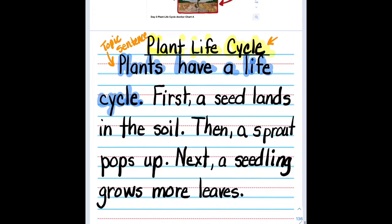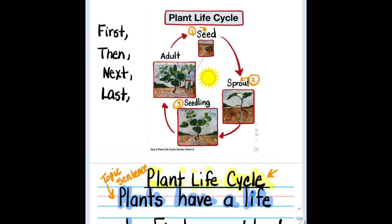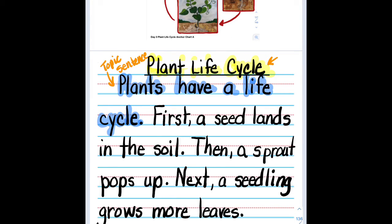And then we have the last part, the adult. Well, so boys and girls, what might we want to include with the adult plant so the reader knows the difference between the seedling and the adult? You're right. You're right. The flowers. Very important. Because that is what makes the seeds. Could we put that in a sentence?